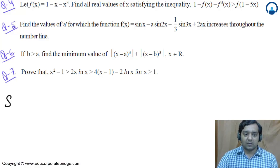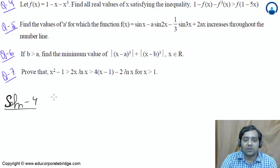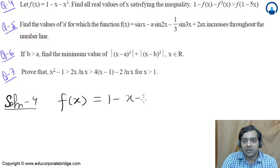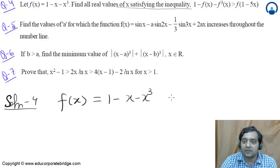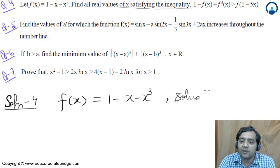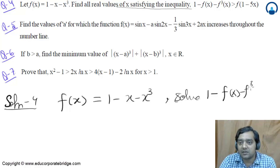Next is question number 4. It says f(x) = 1 - x - x³. Then find all real values satisfying the inequality: 1 - f(x) - f³(x) > f(1 - 5x). This is what we need to solve.